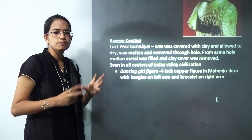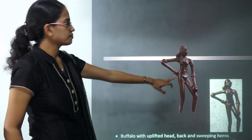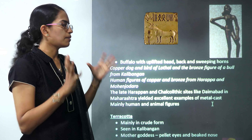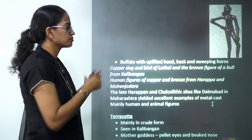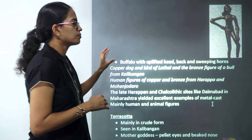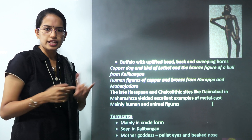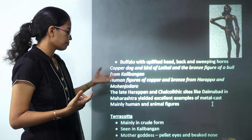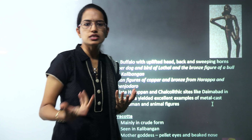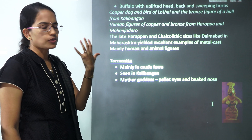Classic bronze figures from this period include the dancing girl, a four-inch copper figure from Mohenjodaro showing bangles on the left hand and bracelets on the right. There was also a buffalo with an uplifted head and sweeping horns, a dog in copper, and a bird from Lothal. A bronze bull from Kalibangan was also found. Copper and bronze human figures came from Harappa and Mohenjodaro. During the late Harappa period, the Chalcolithic site of Daimabad in Maharashtra yielded excellent examples of metal-cast human and animal structures.